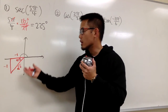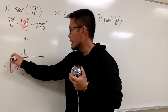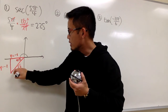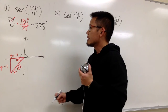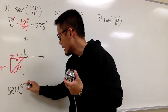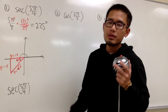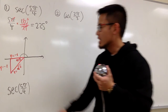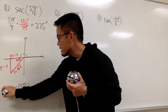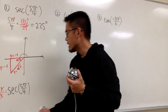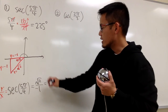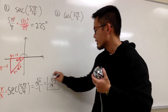We fill in the values of the sides: x equals negative 1, y equals negative 1, and r is square root of 2. At the end, we can figure out sec(5π/4). Remember the definition of secant: secant is the hypotenuse over adjacent, which is r over x. So it's square root of 2 over negative 1, which altogether you can write as negative square root of 2.